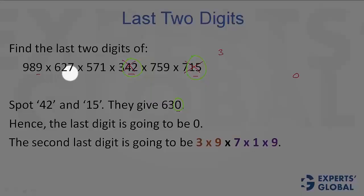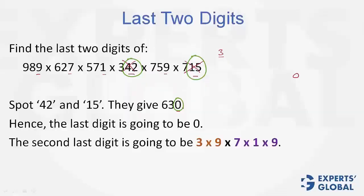9 times 7 equals 63, so 3. 3 times 1 equals 3. 3 times 9 equals 27. And don't forget this 3. 27 means 7. So 7 times 3, which is 21. We have 1 as the answer here.